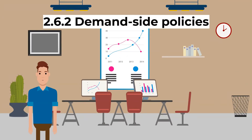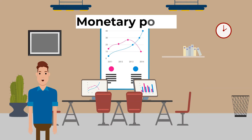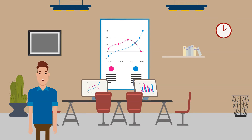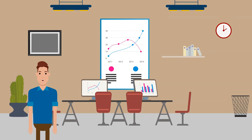Let's consider demand-side policies. Demand-side policies are policies designed to manipulate consumer demand. Expansionary policy is aimed at increasing aggregate demand to bring about growth, whilst deflationary policy attempts to decrease aggregate demand to control inflation. Monetary policy is where the central bank or regulatory authority attempts to control the level of aggregate demand by altering base interest rates or the amount of money in the economy. Fiscal policy is the use of borrowing, government spending, and taxation to manipulate the level of aggregate demand and improve macroeconomic performance.